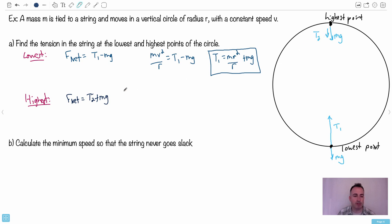So you could say it's T2 plus mg. I mean they're both in the same direction. So therefore we can say mv squared over r equals T2 plus mg. By that then we can say T2 equals mv squared over r minus mg because I'm going to move that one over.